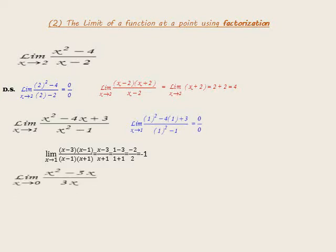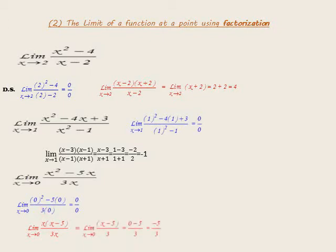Another example: limit as x approaches 0 of (x² minus 5x) over 3x. By substitution the result is 0 over 0. We use factorization: take x as the highest common factor of the numerator, giving x(x minus 5) over 3x. Cancel x with x; the result is (x minus 5) over 3. Substituting x equals 0: (0 minus 5) over 3 equals negative 5 over 3.